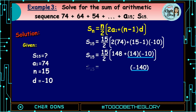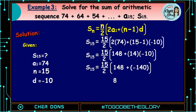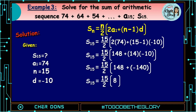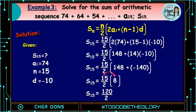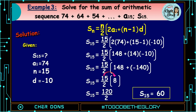So S of 15 is equal to 15 divided by 2 times quantity (148 plus negative 140), that is 8. So S of 15 is equal to 15 times 8, that is 120, divided by 2, which is 60. Therefore, the sum of the first 15 terms is 60.